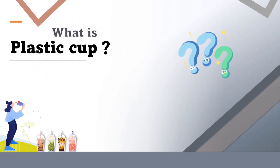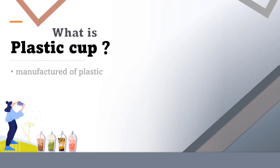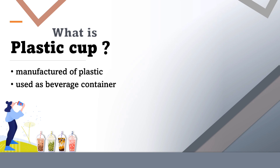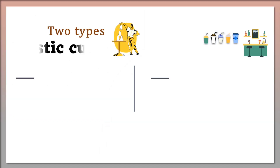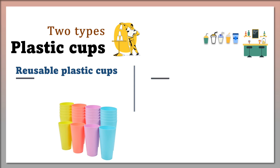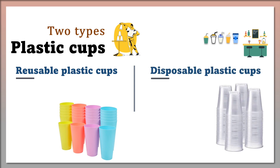What is a plastic cup? A plastic cup is a cup manufactured from plastic and used as a beverage container. There are two different types of plastic cups: reusable plastic cups and disposable plastic cups. Reusable plastic cups are commonly used for soft drinks — this type of cup is easy to collect, wash, and reuse again.